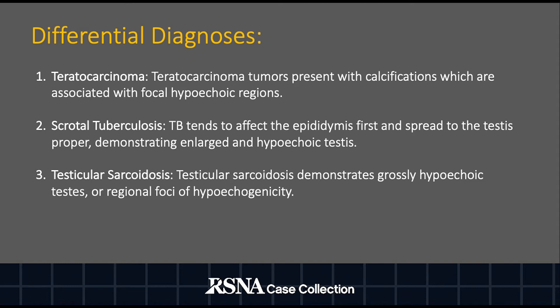The top differential diagnoses include teratocarcinoma, scrotal tuberculosis, and scrotal sarcoidosis. The main differentiating feature of testicular microlithiasis from these entities is the non-shadowing calcifications embedded diffusely within generally homogenous testicular parenchyma. Conversely, teratocarcinoma and testicular sarcoidosis demonstrate regional hypoechoic foci. Moreover, scrotal tuberculosis affects the epididymis and spreads to the testes, demonstrating enlarged and diffusely hypoechoic testes on ultrasound examination.